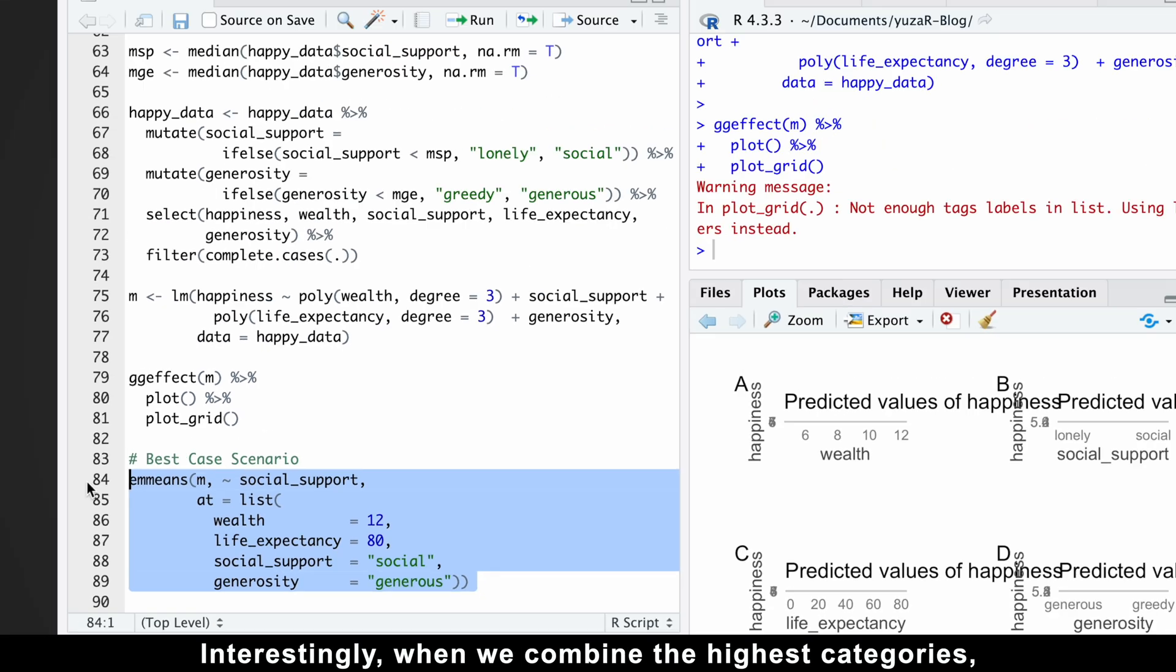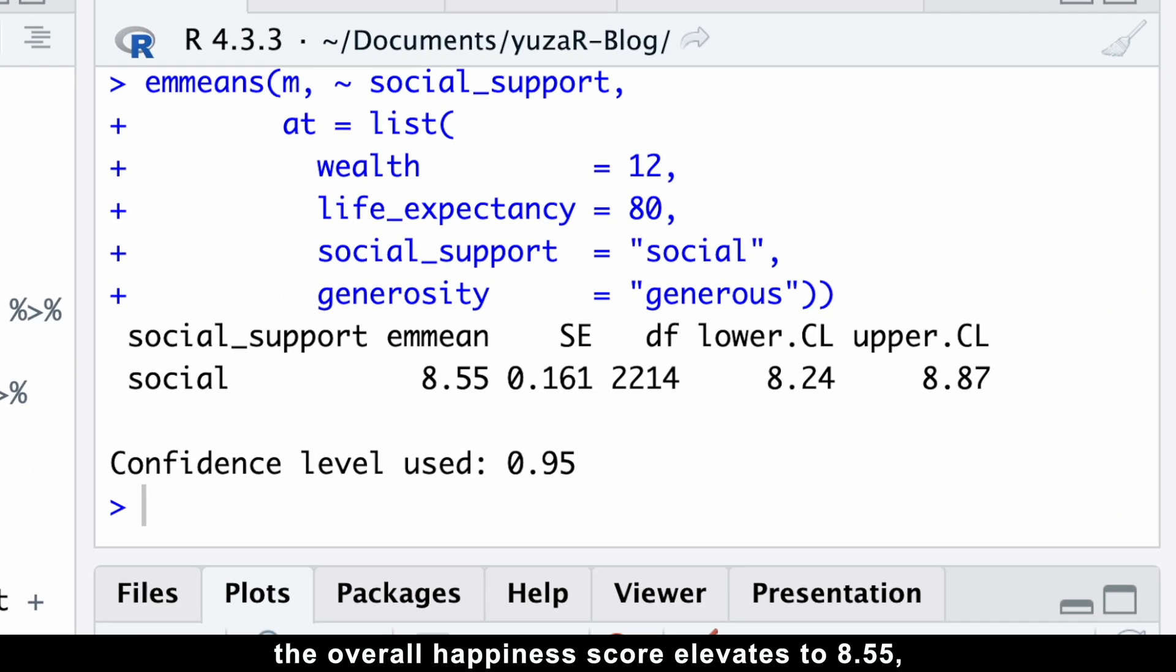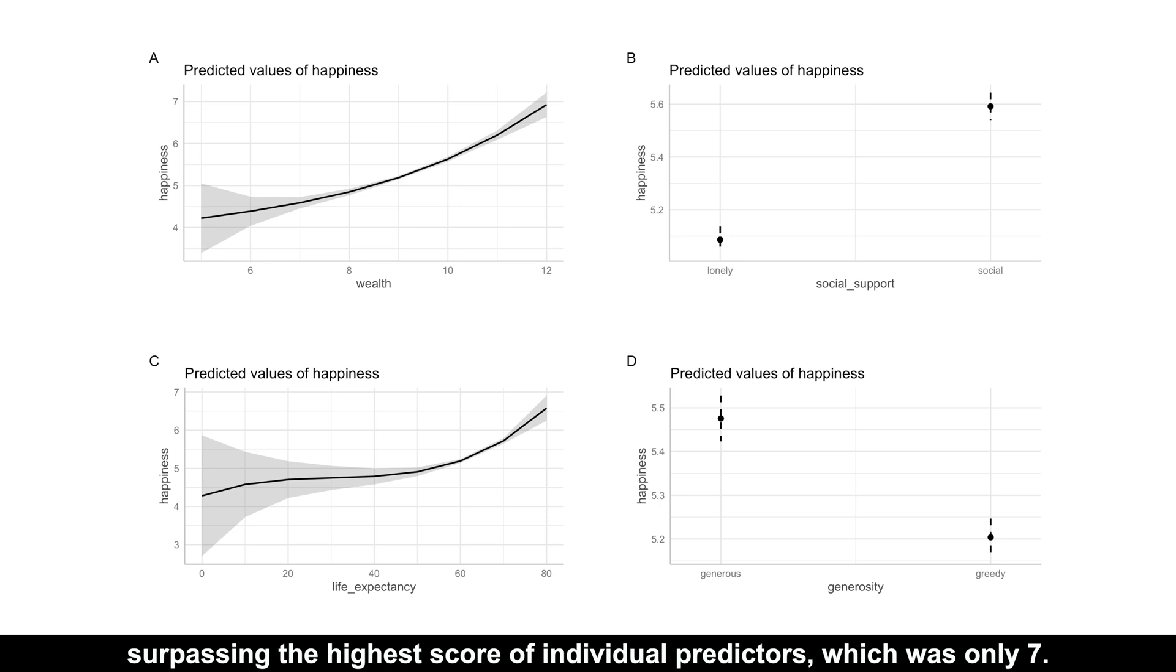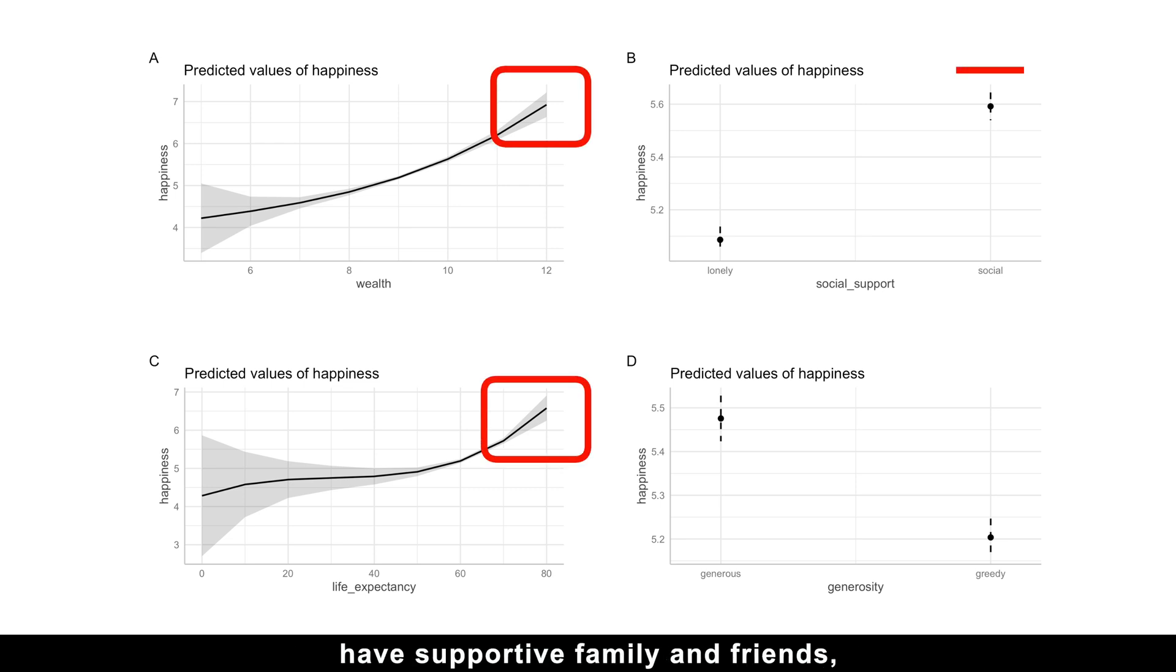Interestingly, when we combine the highest categories, the overall happiness score elevates to 8.5, surpassing the highest score of individual predictors, which was only 7. This suggests that the best-case scenario for happiness occurs when we are wealthy, enjoy longevity, have supportive family and friends, and engage in acts of generosity. Which kind of makes sense.